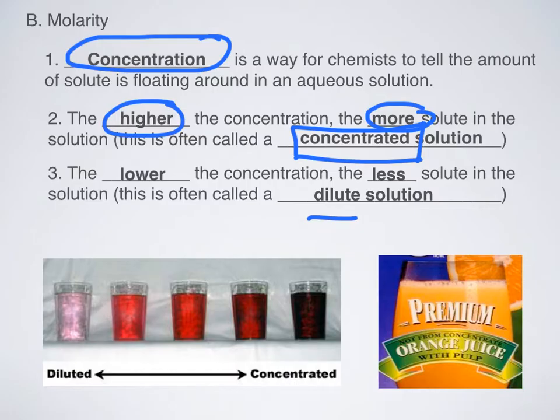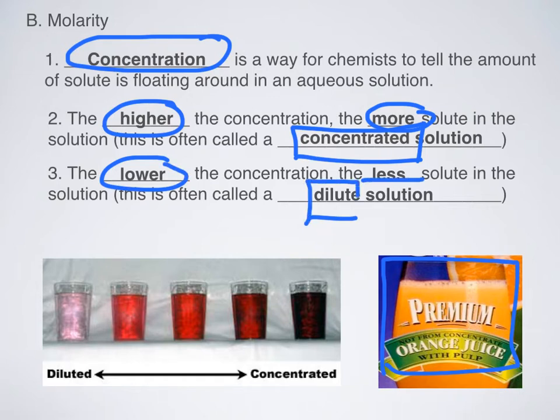Next time, take a look at your orange juice bottle and see if it says not from concentrate. That's a way of telling you it's authentic orange juice. Also, the lower the concentration, the less solute there is and we call that a dilute solution.